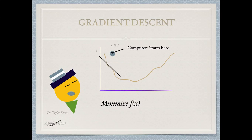So we move the ball to the right, and then let the ball fall again at that point. We calculate the tangent again, see that the tangent goes down if we move to the right, and so we move right again. We keep doing this — move the ball, let it fall, check the tangent — until we reach a point where we cannot move anymore. This is typically a local minimum, and it is the smallest point on the curve.